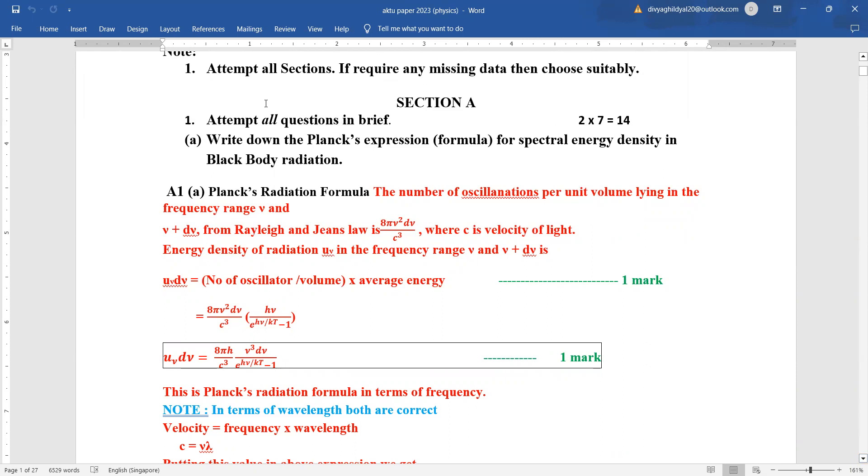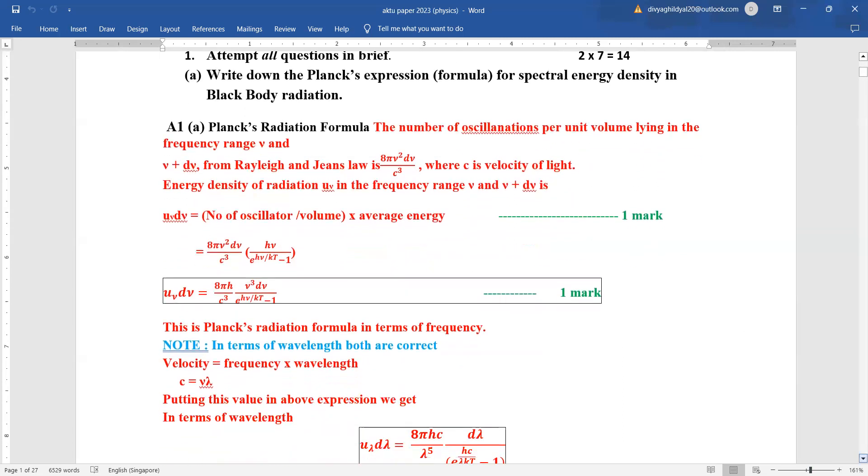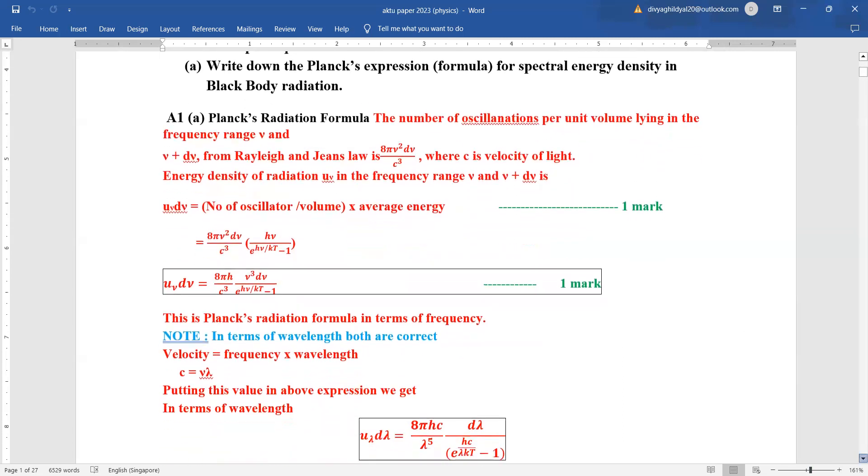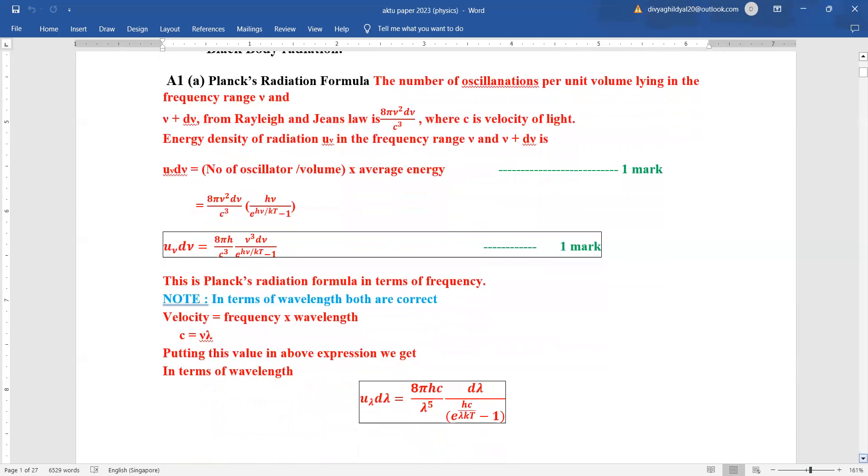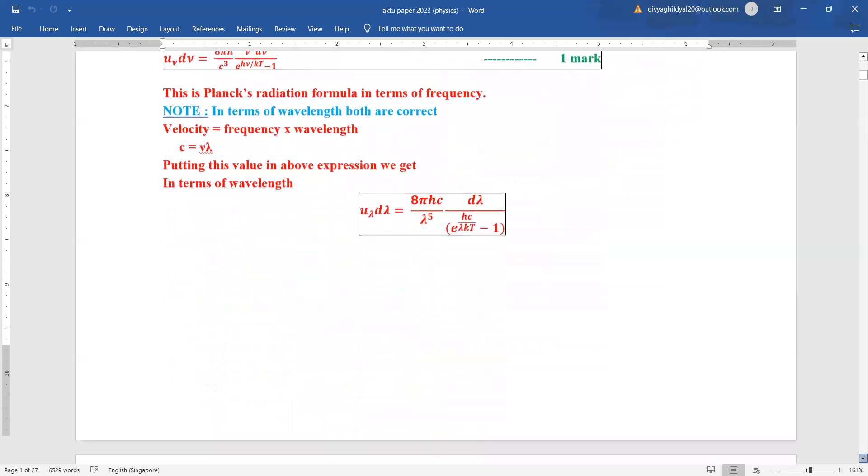The first question was write down Planck's expression or the formula for spectral energy density in black body radiation. They have not asked you to derive it, only to write the formula. So you can write it in terms of frequency or wavelength. Both are correct and you will fetch your two marks.